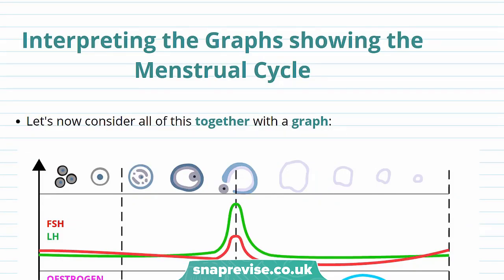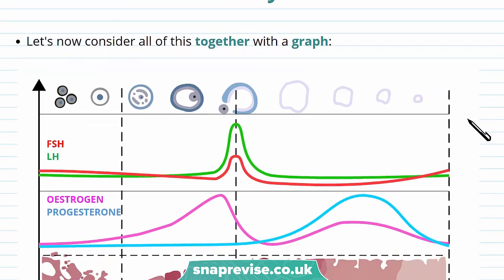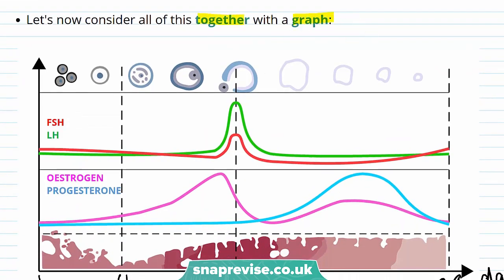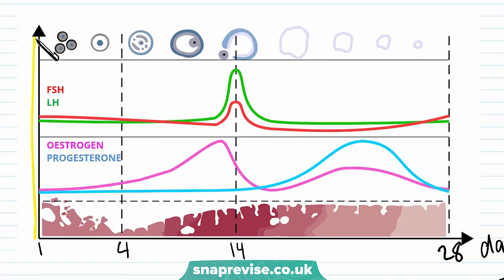In part one of this video we discussed that hormones control the stages of the menstrual cycle and that these hormones interact. Now let's consider all four hormones together with a graph. This graph shows the levels of the four hormones over 28 days. The red line stands for FSH levels, the green line for LH levels, the pink line for estrogen levels, and the blue line for progesterone levels.